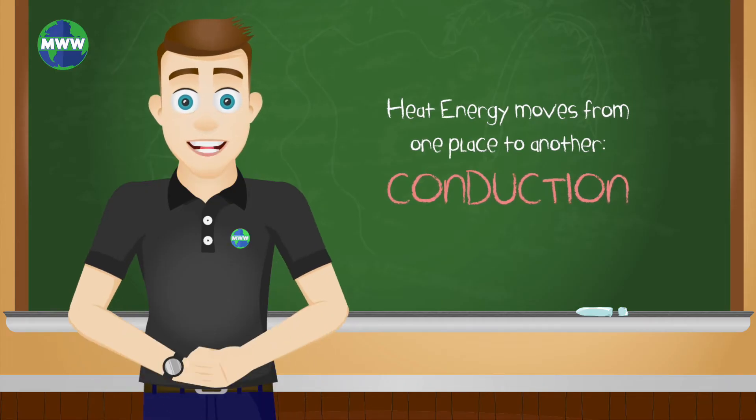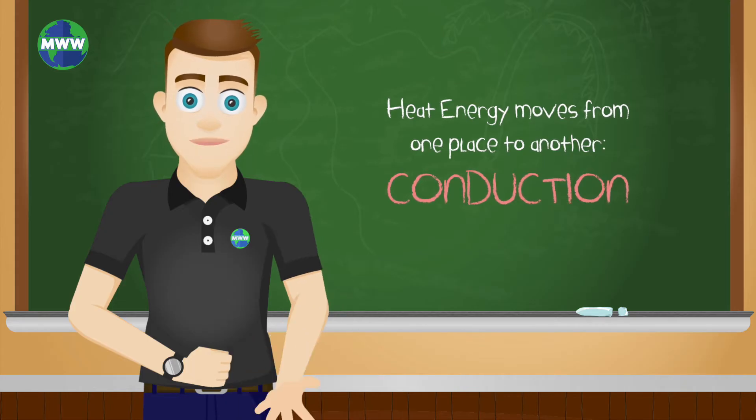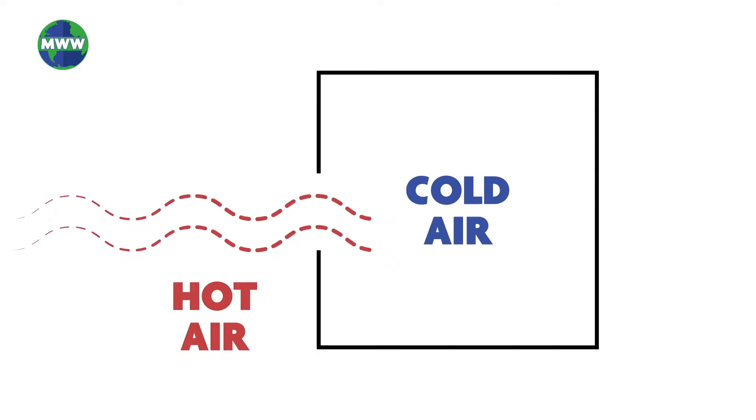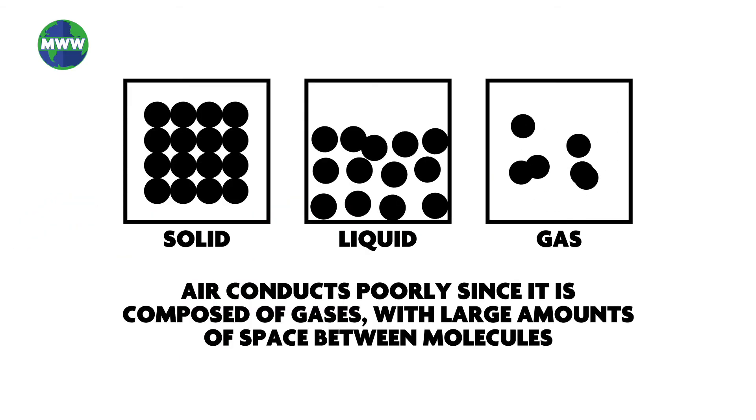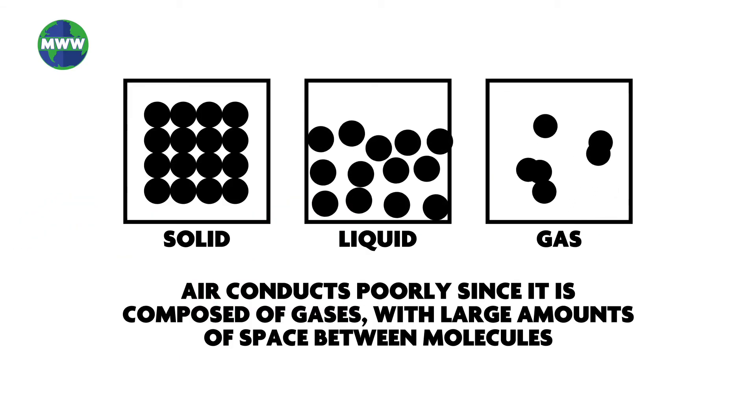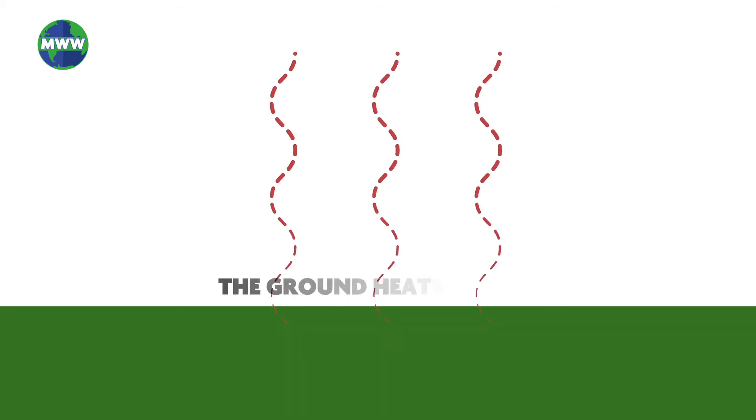Conduction is the second way heat transfers in the atmosphere. Conduction is when heat energy moves from one place to another. Heat flows from hot to cold. Air, composed of gases, doesn't conduct as well as a solid or liquid, but in the atmosphere, heat will flow from the hot ground to the cooler air above and warm it.